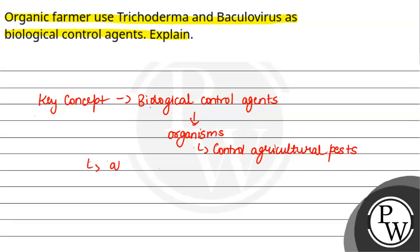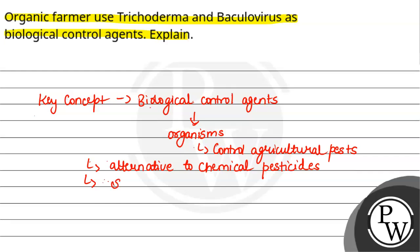Biological control agents act as an alternative to chemical pesticides. If we use them, there is no need to use chemical pesticides, so their use is reduced or eliminated. Chemical pesticides harm our crops. Therefore, biological control agents promote sustainable agriculture by reducing the use of chemical pesticides.